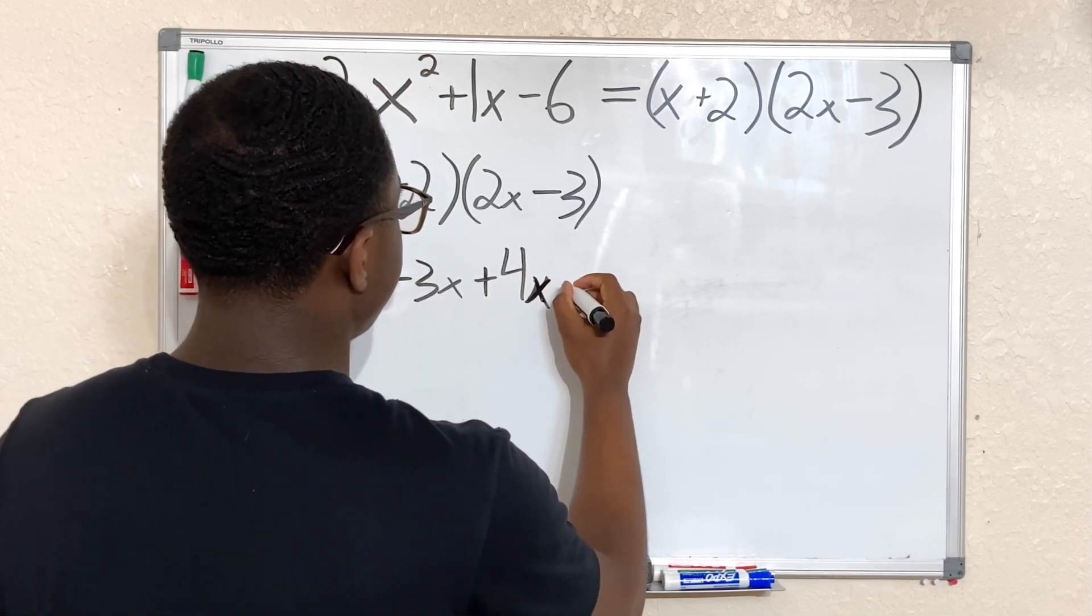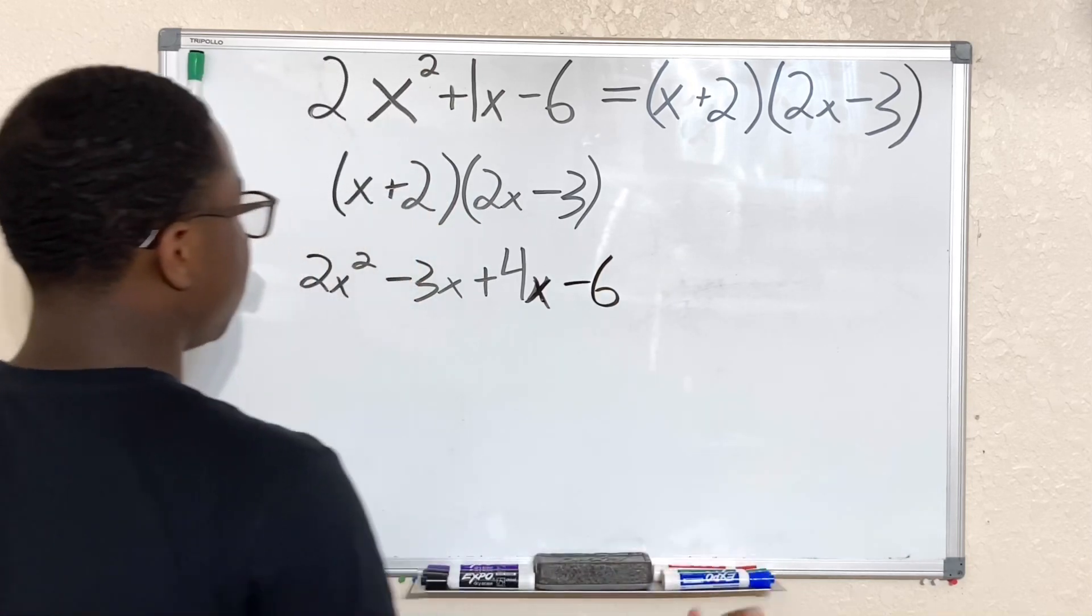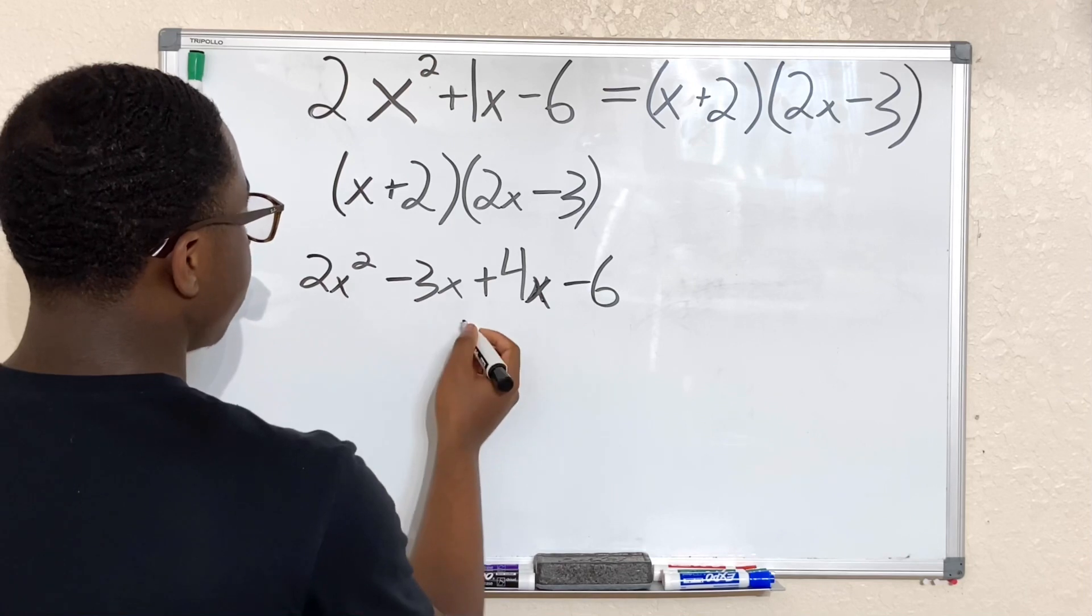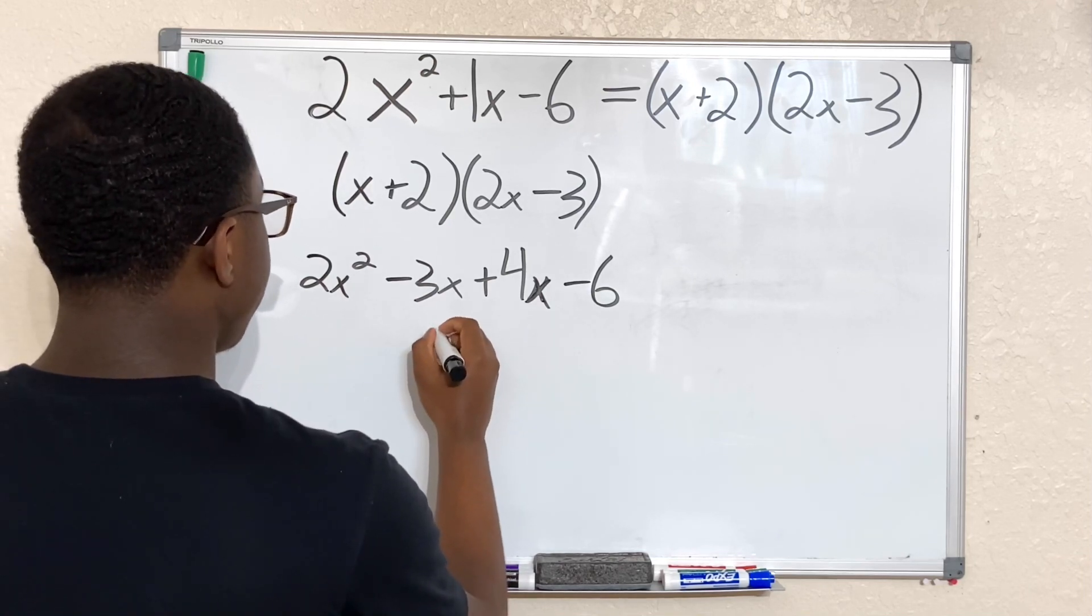Now let's factor and bring together our like terms. Now we have -3x plus 4x—that'll give us 1x or just x.